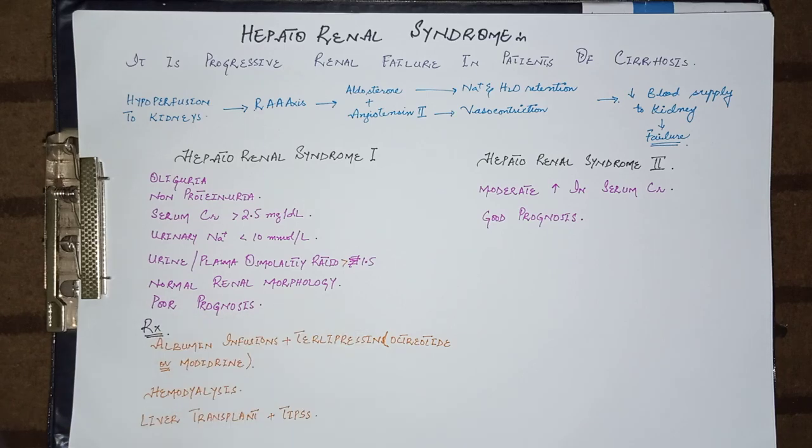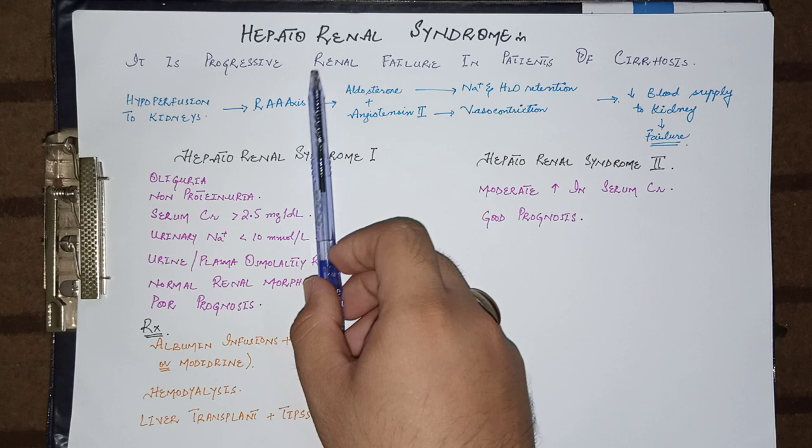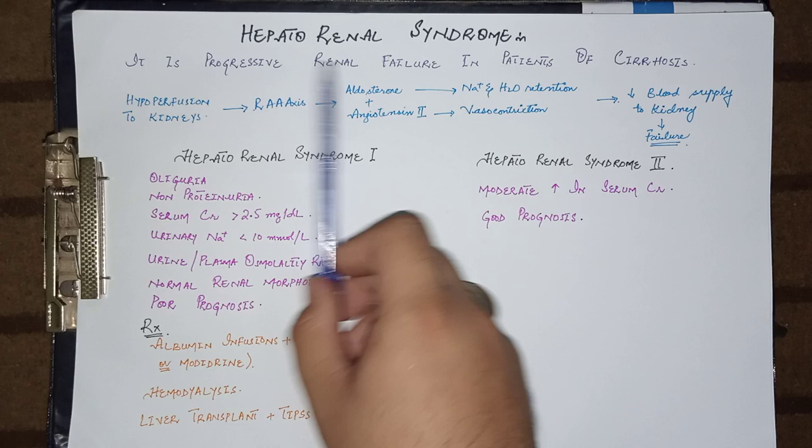Assalamu alaikum everyone. Today we are going to talk about the last complication of cirrhosis or ascites, that is hepatorenal syndrome. It is a progressive deterioration in the renal function in patients of cirrhosis. Let's talk about the pathophysiology.